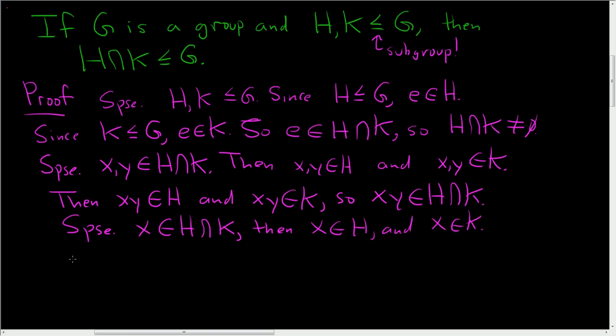Since H is closed under inverses, then the inverse of X also lives in H. And since K is closed under inverses, the inverse of X lives in K as well. And once again, by definition of intersection, the inverse lives in the intersection.